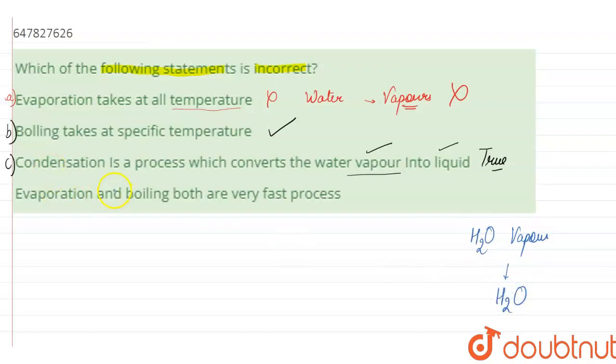Evaporation and boiling both are very fast processes, so this is right here too. So here we had an incorrect statement, which was the first one, that evaporation takes place at every temperature.